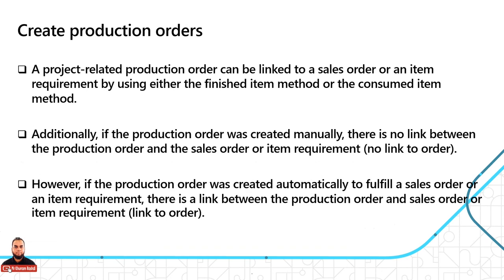A project-related production order is linked to a sales order or item requirement using either the finish item method or consumed item method. If a production order was created manually, there is no link between the production order and the sales order or item requirement. However, when automatically created to fulfill a sales order or item requirement, a definite link exists between the production order and the sales order or item requirement.